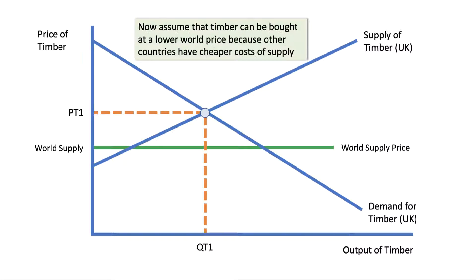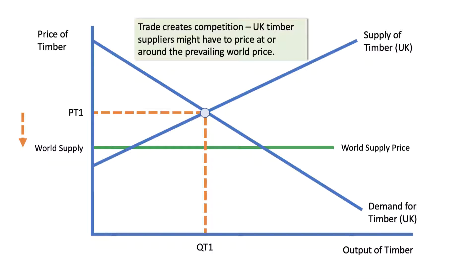I'm going to assume that timber can be bought at a lower world price because other countries perhaps have a comparative advantage — a cheaper marginal cost of supplying timber. I've deliberately drawn the world supply price below the domestic price. You can see there's quite a big gap between PT1 and the world supply.